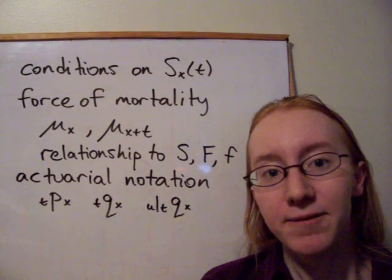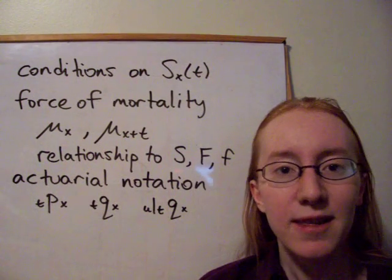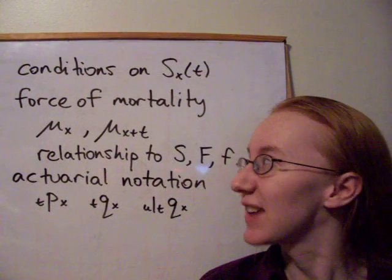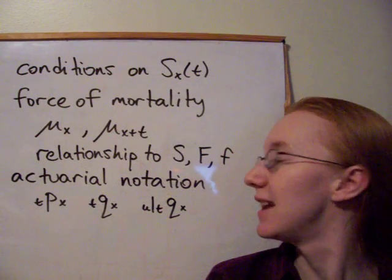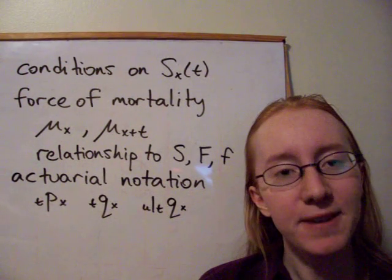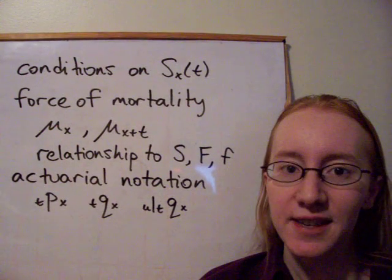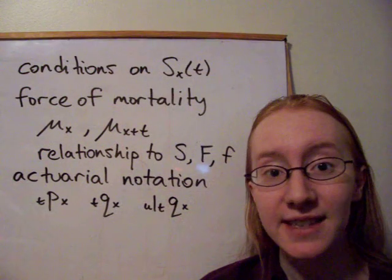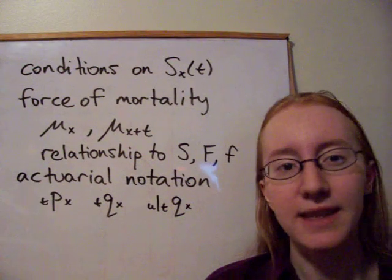We looked at five different relationships that exist between mu_x and mu_{x+t} with the remaining functions that we know about a survival model. We had two ways each of getting mu_x and mu_{x+t} from the other three functions — S and little f. And then the fifth and most important relationship is how to get S from mu_x. If we can figure out mu_x from data or however we model it, then we can get the rest of the survival function by using that fifth relationship.